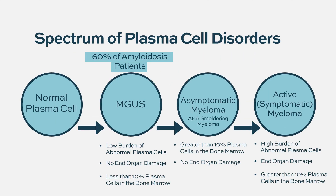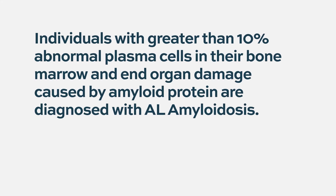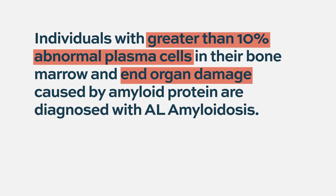So in 60% of patients with amyloid, they have less than 10% plasma cells in their bone marrow. However, about 40% will have greater than 10% plasma cells in their bone marrow, as well as the characteristic end organ damage attributable to the amyloid protein. Those patients don't have asymptomatic myeloma either. If all of the end organ damage is attributable to the amyloid protein, those patients also have primary systemic amyloidosis.